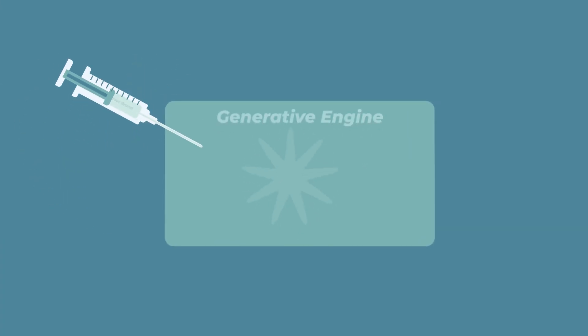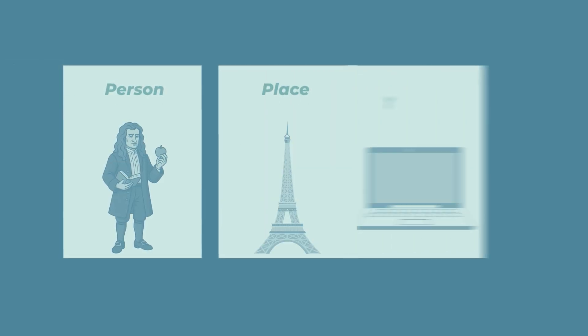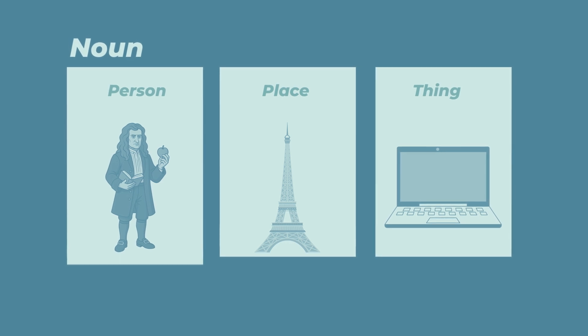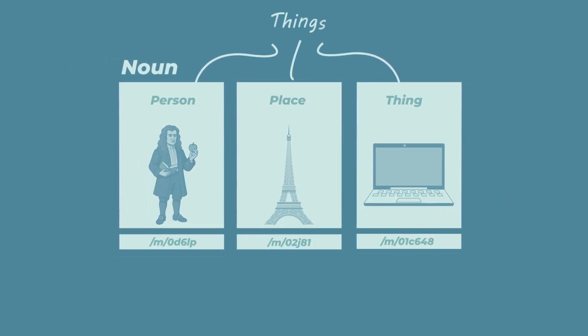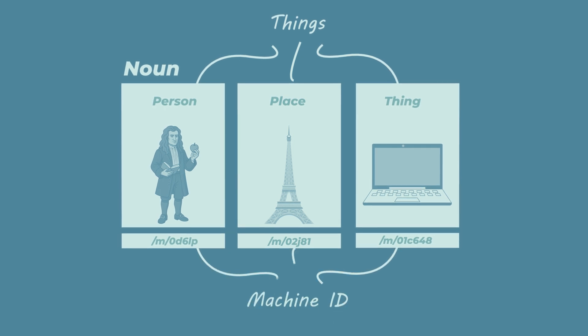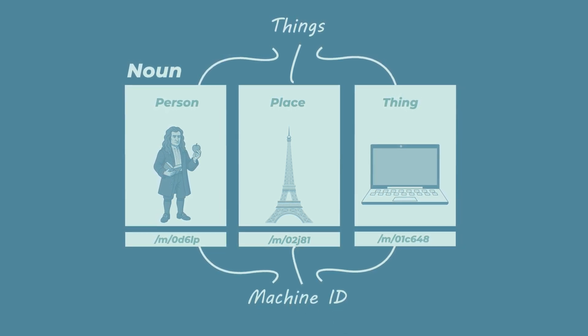How do you inject your brand into generative engines? You become an entity. When I say entity, don't think of aliens coming down to earth and taking over. An entity is actually really simple, and it's been going around the traditional SEO world for a long time. An entity is a person, place, or thing — a noun, and particularly a noun with a machine ID. These are things that a machine understands and has a specific ID for.